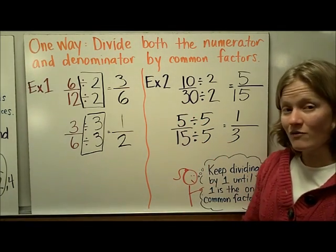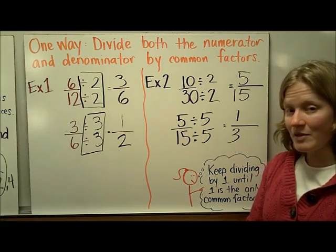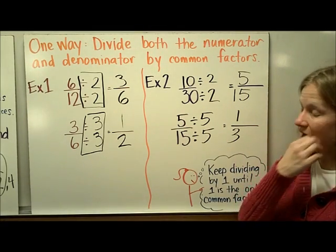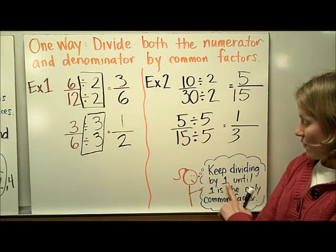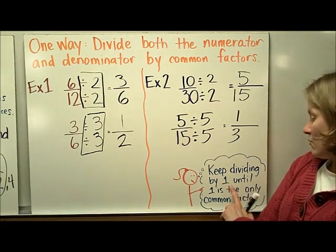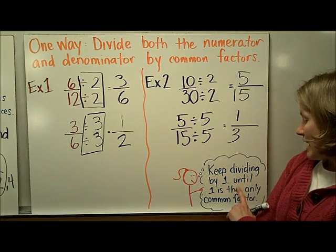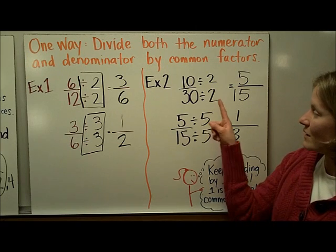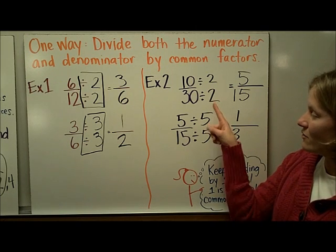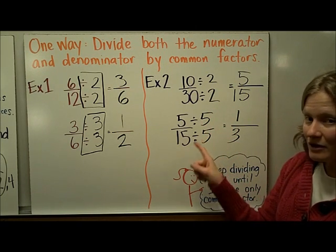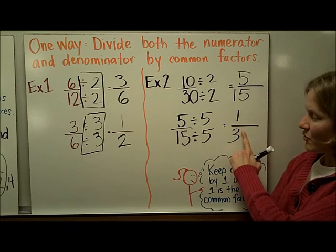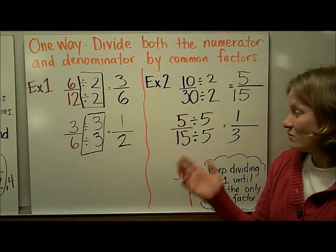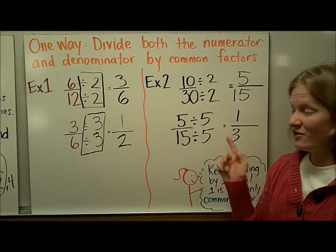The way that you know you're done dividing is to keep dividing by the one whole fraction until 1 is the only common factor. I divide it by a one whole fraction, then again. When I get to this point, 1 and 3 — the only common factor they have is 1. So I know that I'm finished.